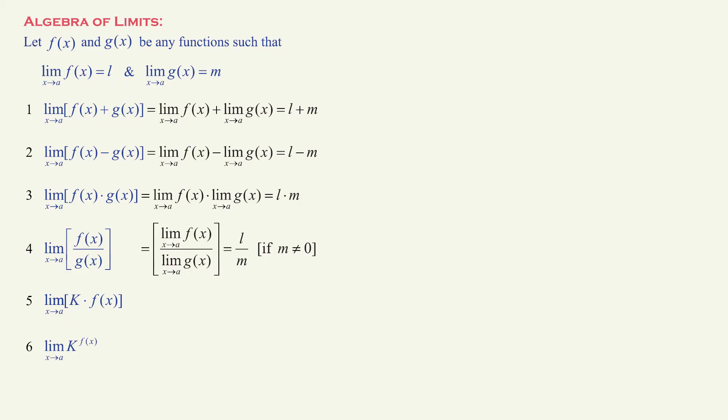Here we have k times f of x — k is just a constant, meaning any number. Limit goes to the variable; it does not care about constants. This simplifies to k times L. Finally, we have k raised to f of x — limit goes to the variable, giving us k raised to the limit of f of x, which simplifies to k raised to L. Now you know how limits move in a mathematical expression, which means we are ready to solve some real questions.